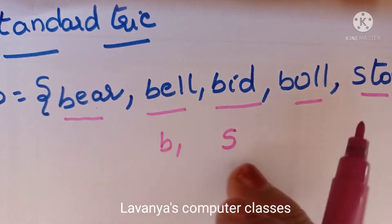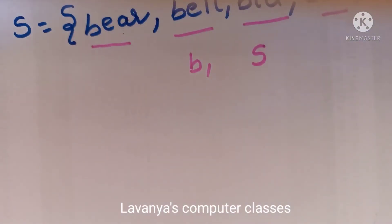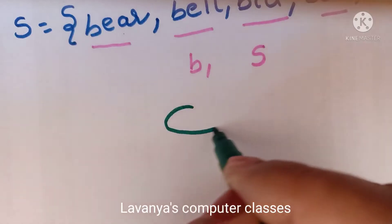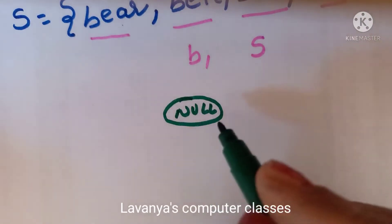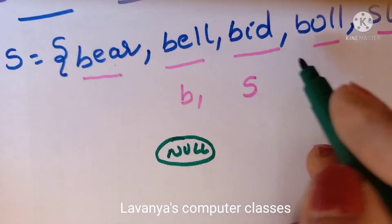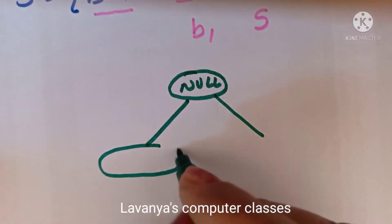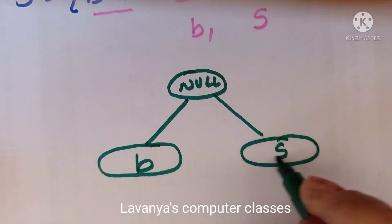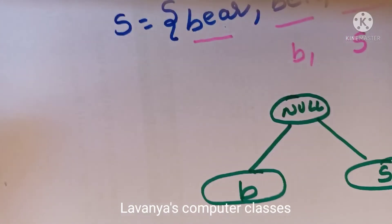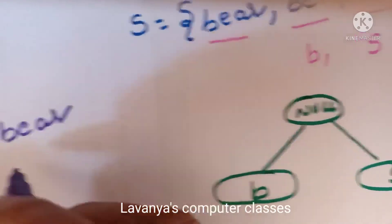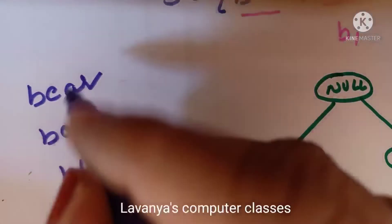First, root node is null. Because in a standard trie structure, the root has no children labelled — it is null with maximum pointers. From root there are two pointers: first B, second S. Let's start constructing from B.